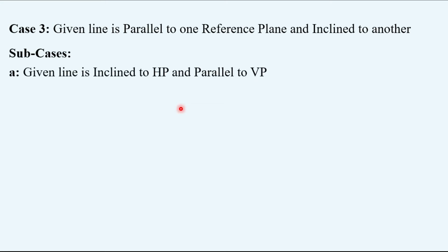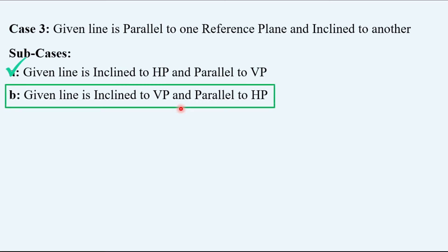Sub-case A: when the given line is inclined to HP and parallel to VP. Or sub-case B: when the given line is inclined to VP and parallel to HP. As we have already gone through sub-case A of the third case in the previous video, now we will look at sub-case B of Case 3.